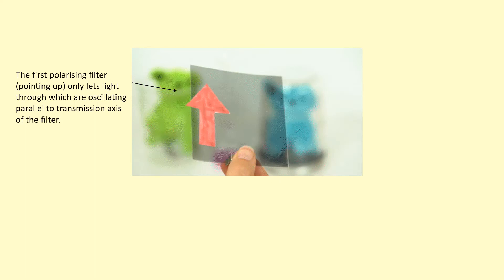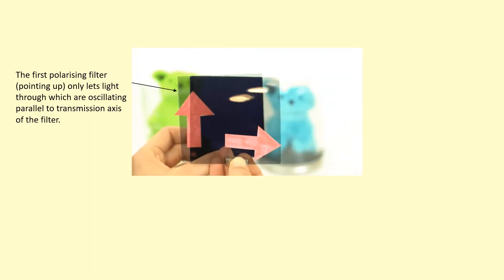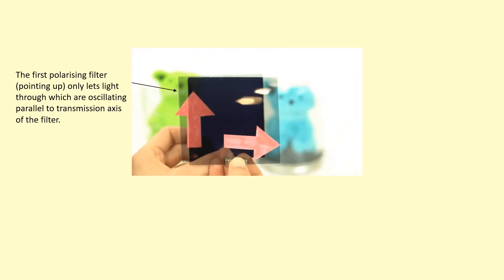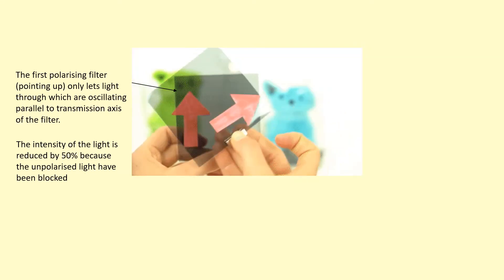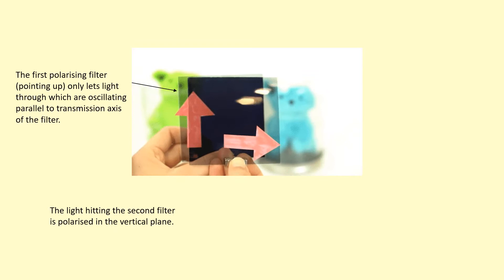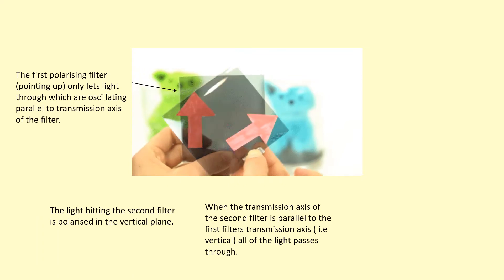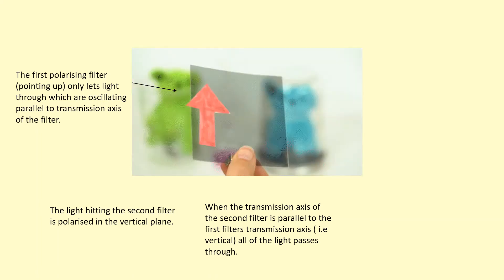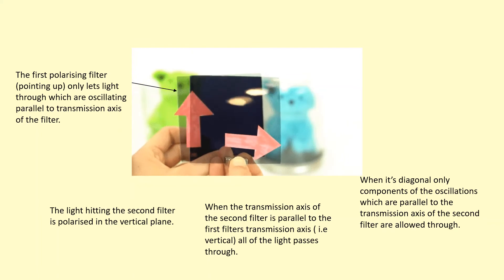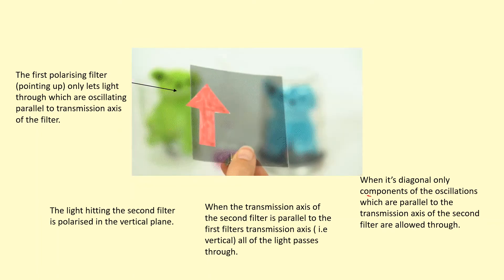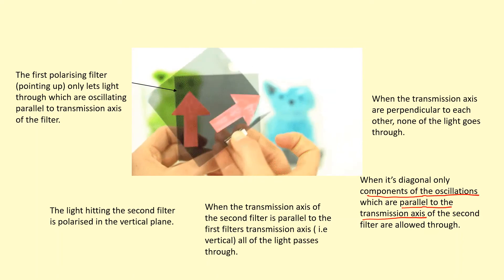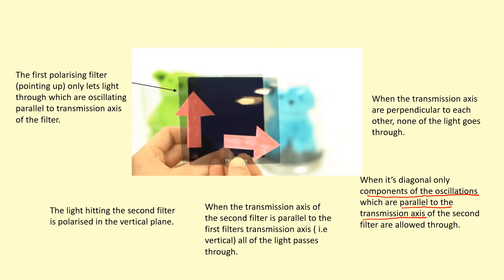Let's explain what's going on. The light coming in from the back is unpolarized. When it hits the first filter pointing upward, only light oscillating parallel to the vertical plane passes through — this already reduces the intensity by 50 percent. The light reaching the second filter is already polarized in the vertical plane. When the second filter is also pointing up — both parallel — all that polarized light goes through. At a diagonal the intensity decreases, and at 90 degrees, perpendicular, none of the light goes through.